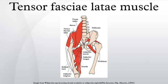Innervation: the tensor fasciae latae is innervated by the superior gluteal nerve, L5 and S1, at its origins of the anterior rami of L4, L5, and S1 nerves. The superior gluteal nerve exits the pelvis via the greater sciatic foramen and superior to the piriformis.